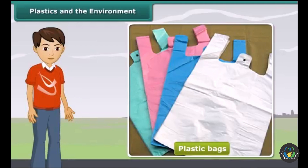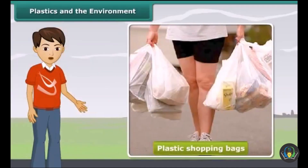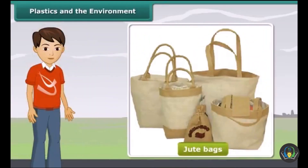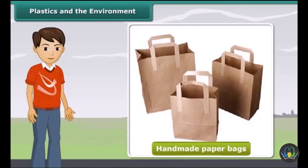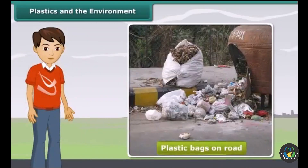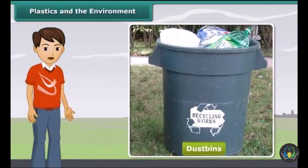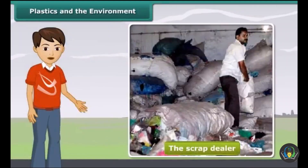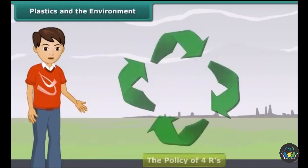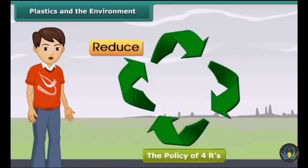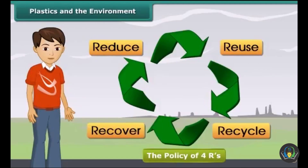We can replace plastic shopping bags with jute bags or handmade paper bags. On roads, use dustbins marked as biodegradable and non-biodegradable for respective waste products. Sell plastic scraps to the scrap dealer for recycling. Adopt the 4R principle: reduce, reuse, recycle and recover.